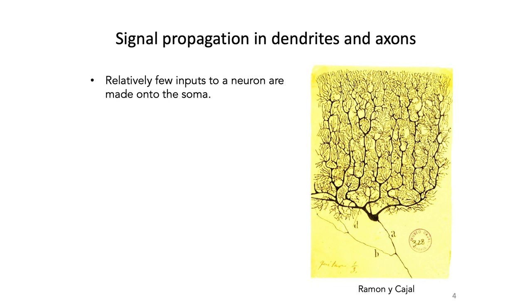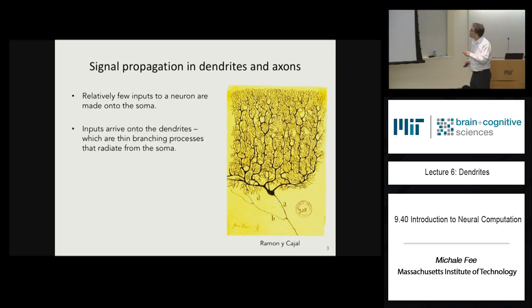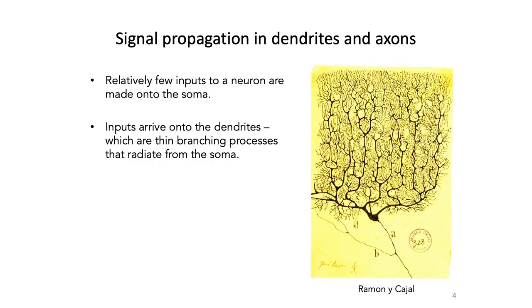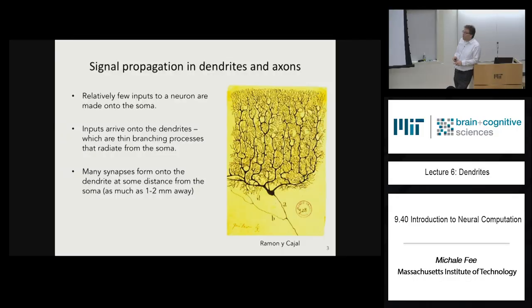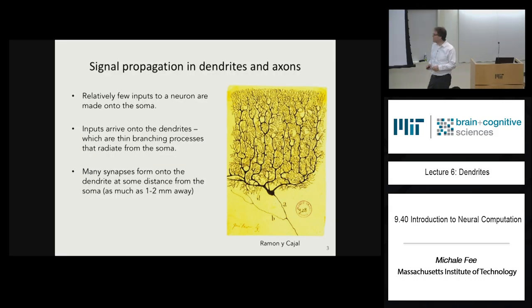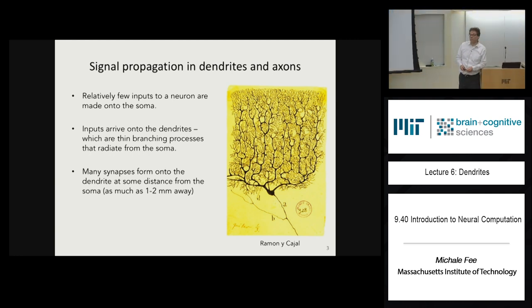In real neurons, relatively few of the inputs actually come onto the soma. Most of the synaptic inputs arrive onto the dendrites — these branching cylinders of cell membrane. The vast majority of synapses form onto the dendrites at some distance from the soma. Sometimes those synapses can be as far away as 1 to 2 millimeters for very large neurons in cortex.